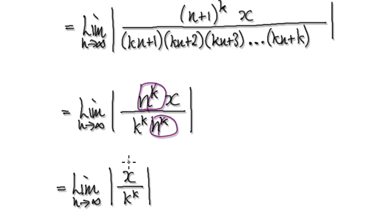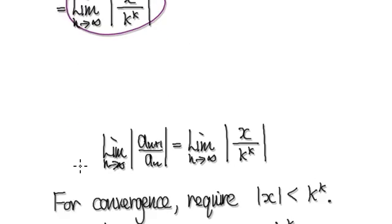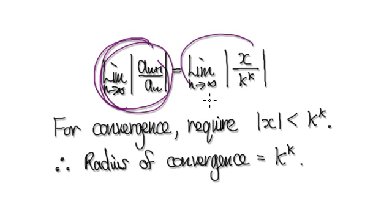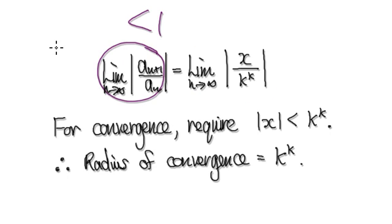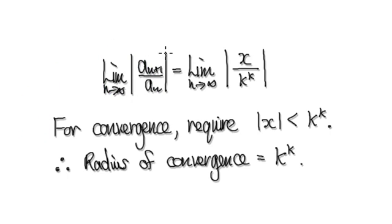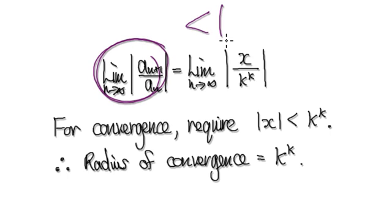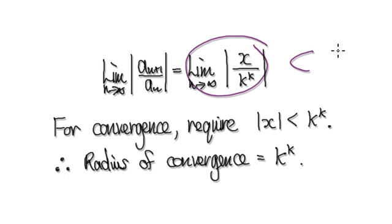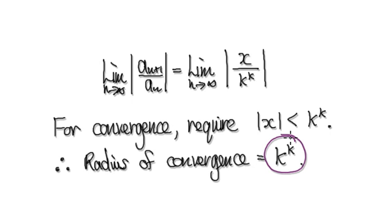So all that you're left with is this. We've reached this stage. To perform the ratio test, we always need to compute this value, which turns out to be this. For convergence, we require this to be less than 1. If it's greater than 1, it diverges; if it equals 1, it's inconclusive. So for convergence, we need this less than 1, which means making the numerator less than k to the power of k. Anything less than k to the power of k means the whole thing is less than 1. So your radius of convergence happens to be k to the power of k.